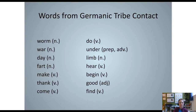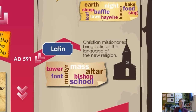Going back to our infographic, Latin touches English again around 591 AD because Christian missionaries were coming along, bringing religious documents and texts and sharing their religion. This is the point where words like mass, martyr, and bishop entered the region — entered Anglia, the British islands — and therefore entered the English language.